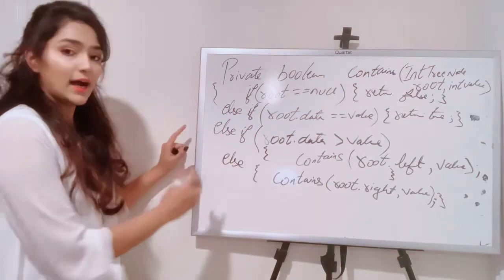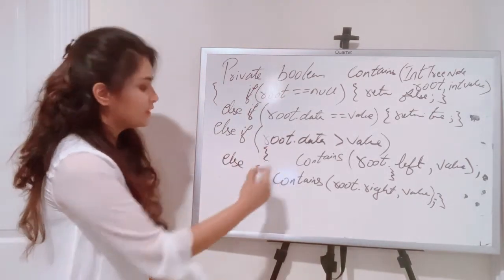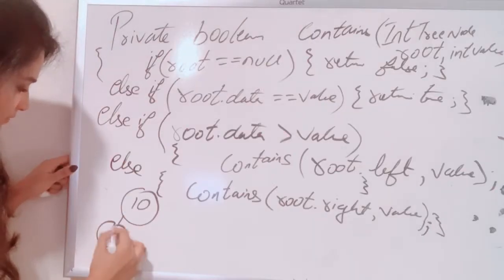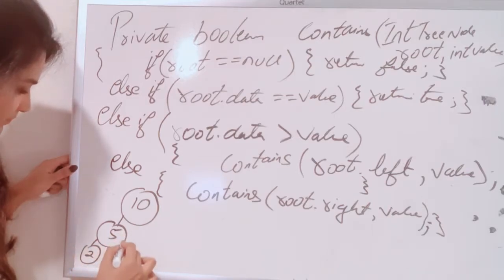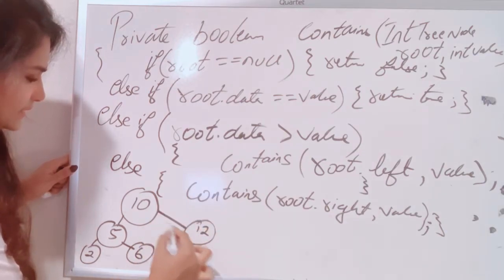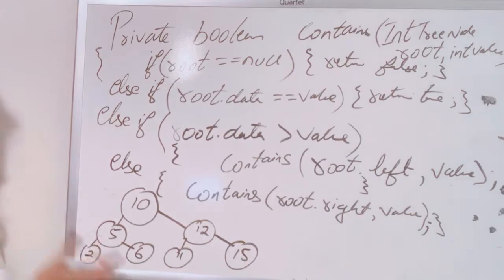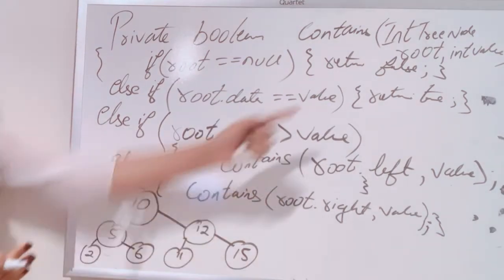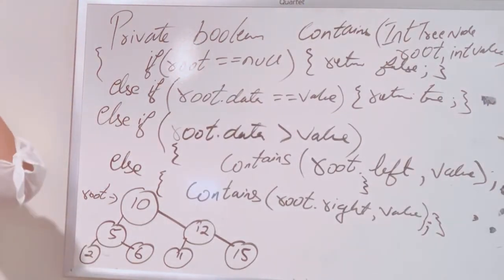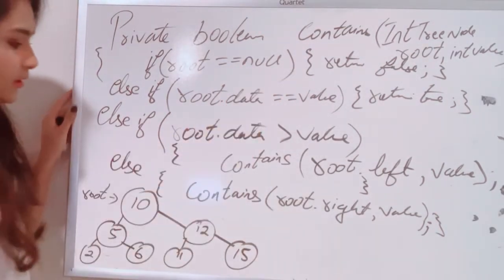Now let's do a dry run. I will draw a small tree so we can trace through it easily. Our root is 10. On the left we have 5, and under 5 we have 2 and 6. On the right of 10 we have 12, with 11 to its left and 15 to its right. Our root is pointing at 10.